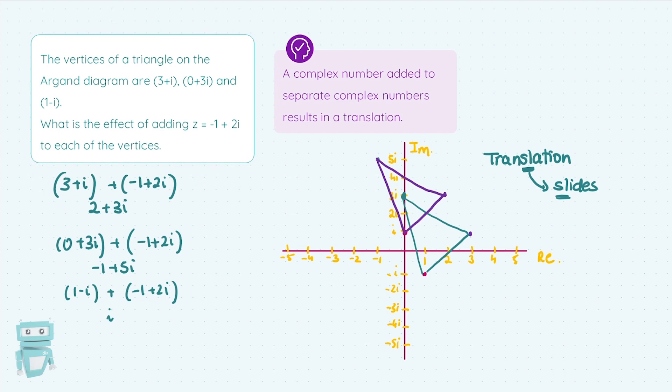So that original green triangle has just slid up -1+2i. So when a complex number is added to separate complex numbers, it results in a translation.